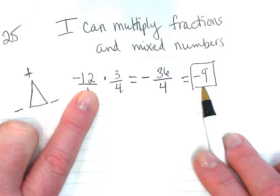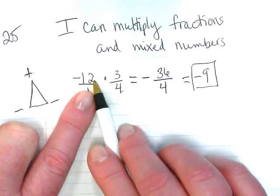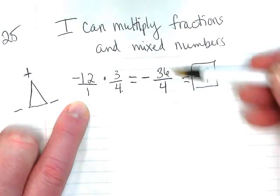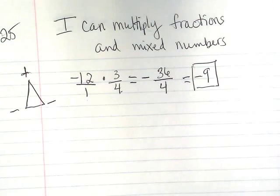So we just want to look at our facts and see, does that make sense with what we did? I had negative 12 times 3 gets me negative 36. 1 times 4 is 4. If I'm dividing these, I end up with my negative 9.